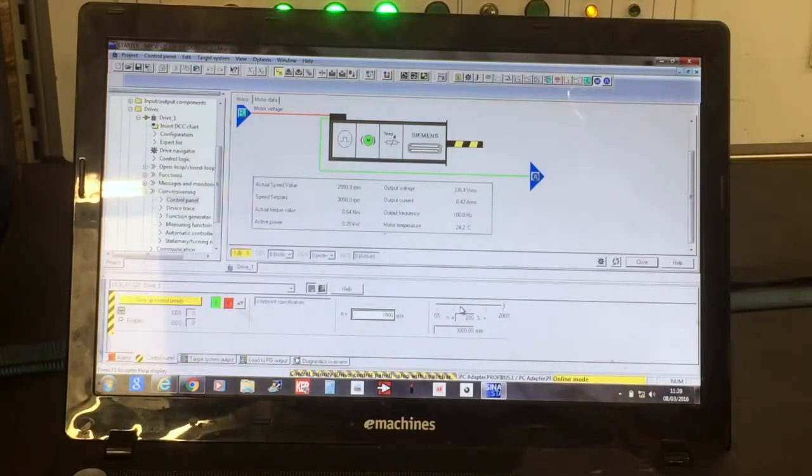The Siemens drive is operating the motor and here is the control centre on the laptop. The pictorial shows the motor operating. We are running at 3000 RPM. The motor is currently giving an output power of 0.22 kilowatts, which is 0.63 newton metres, and the motor temperature currently is 24.6 degrees C.